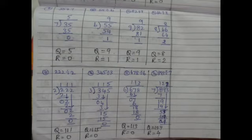One more sum: 35 divided by 7. We say the 7 times table up to 35: 7 ones are 7, 7 twos are 14, 7 threes are 21, 7 fours are 28, 7 fives are 35. So in the 7 table, we have 5 times 35. 7 fives are 35; 35 minus 35 is 0. Division is repeated subtraction — we do the subtraction step by step. The quotient is 5 and the remainder is 0.